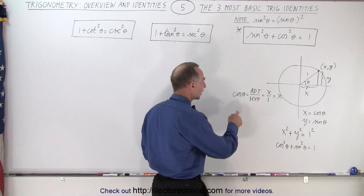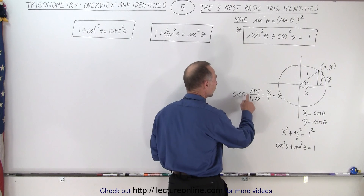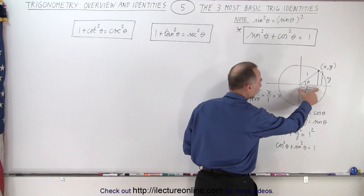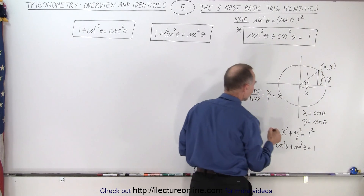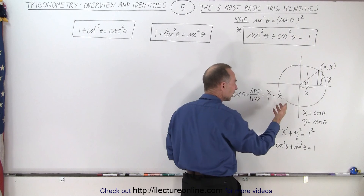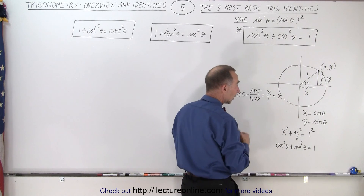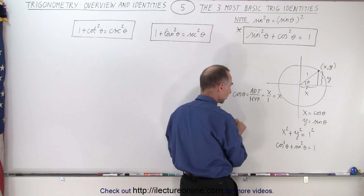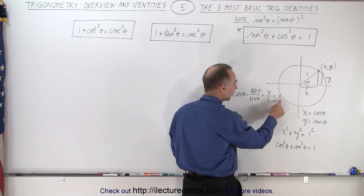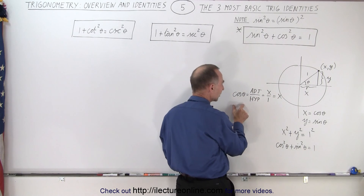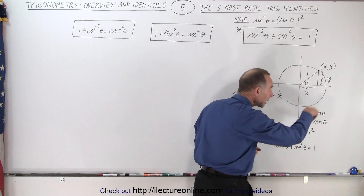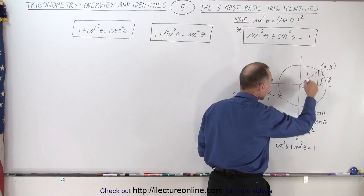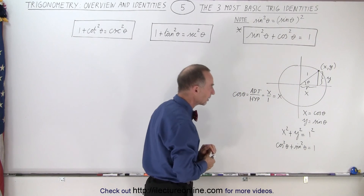Remember that we define the cosine as the ratio of the adjacent side over the hypotenuse. In this case, the adjacent side is equal to the x value of that point on the unit circle, and the hypotenuse is defined as 1 on the unit circle because it's equal to the length of the radius of the circle. So x divided by 1 equals x, so the cosine of theta can be defined as x, and the sine of theta can be defined as y on the unit circle when you draw the triangle with the angle on the left corner.